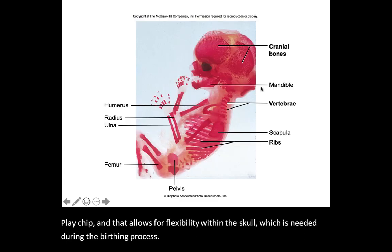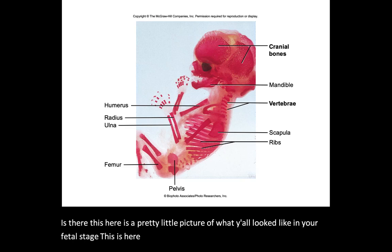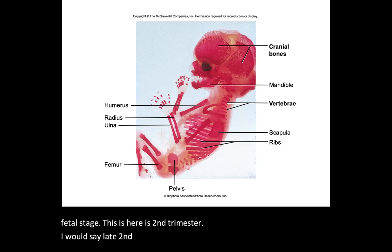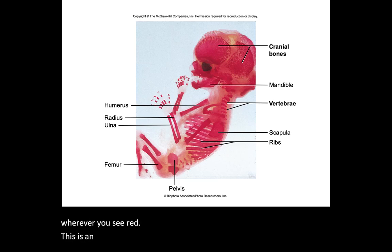Here is a picture of what you looked like in your fetal stage — this is late second trimester. Wherever you see red, this is an area of red bone marrow. If you look within the cranial bones, you can actually see all that spongy bone.